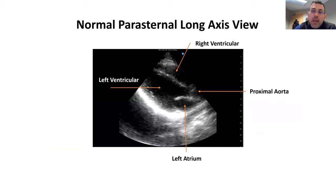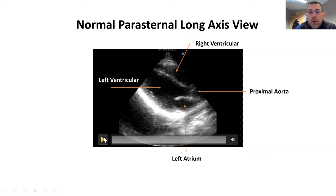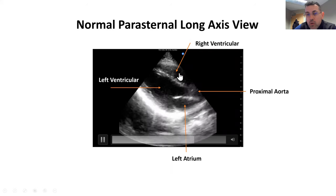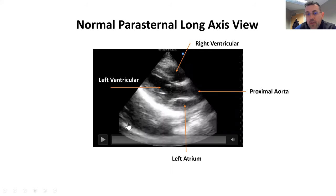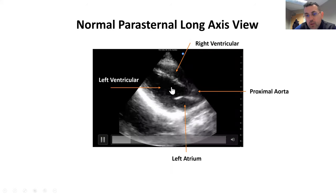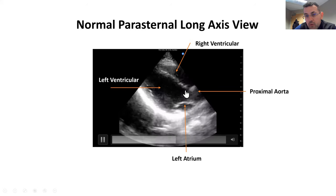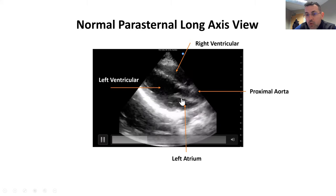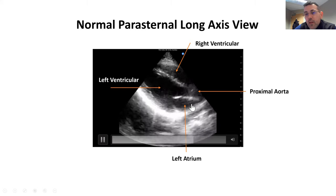Here we obtained our probe positioning between the second and the fourth intercostal space on the left side of the sternum. Running a clip, we can see up here our right ventricle, down here our left ventricle kicking out towards the left ventricular outflow tract. You can see a little bit of the proximal aortic valve, the proximal aorta, as well as the mitral valve and the left atrium.